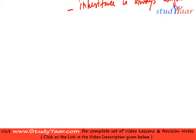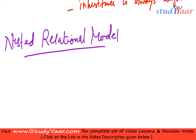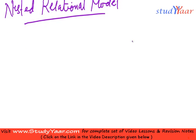Now let's understand what is a nested relational model. A relational model in which relations are allowed within relations is called a nested relational model. So nested relational model indicates relations within a relation.